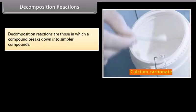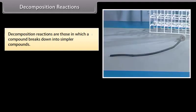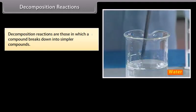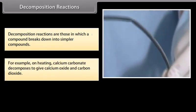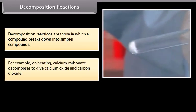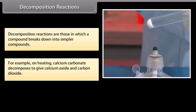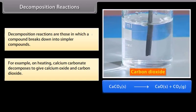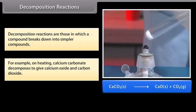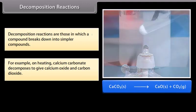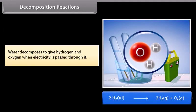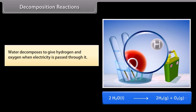Decomposition reactions are those in which a compound breaks down into simpler compounds. For example, on heating, calcium carbonate decomposes to give calcium oxide and carbon dioxide. CaCO3 gives CaO plus CO2. Water decomposes to give hydrogen and oxygen when electricity is passed through it.